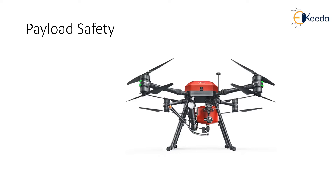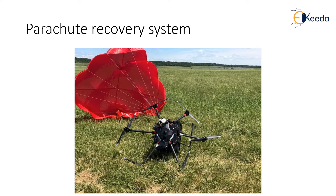Therefore, the gimbal not only plays the role of stabilizing the camera but also acts as a vibration absorber for the payload. In case of critical failure, autonomous parachute deployment systems are now the primary drone recovery method. Autonomous emergency systems are responsible for deploying the parachute in case of a critical failure such as loss of radio control or electrical, signal, or engine failure.